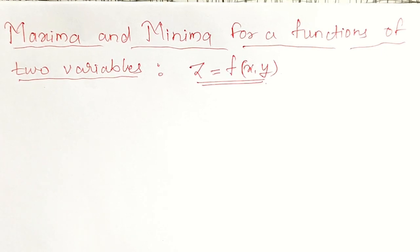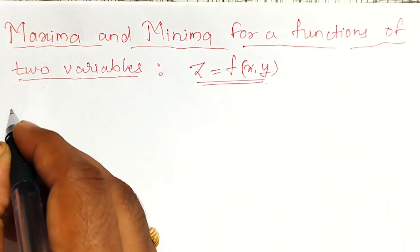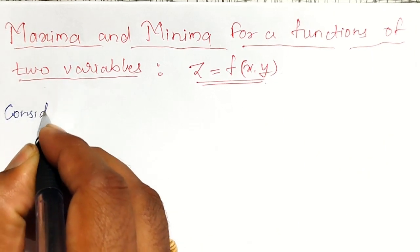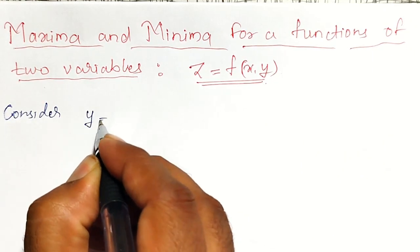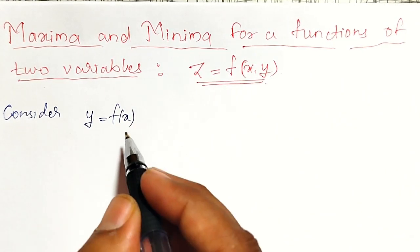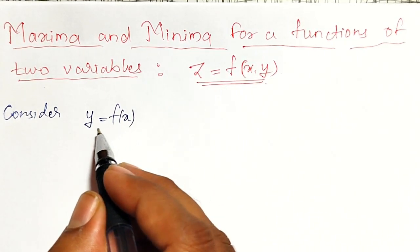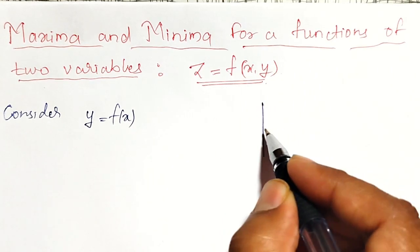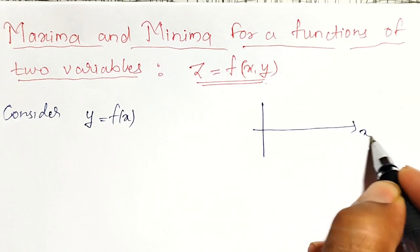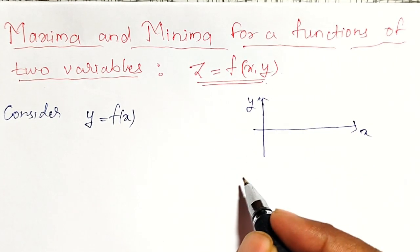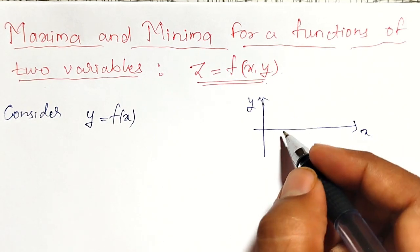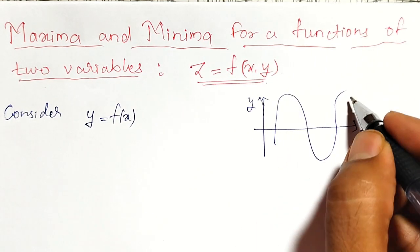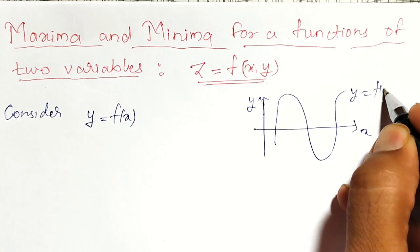Before that, I would like to review what is the function for a single variable. Consider y equal to f of x. It is a single variable function — y depends on a single variable x. Geometrically, it represents a curve in a two-dimensional plane with x-axis and y-axis. This is the curve y equal to f of x.